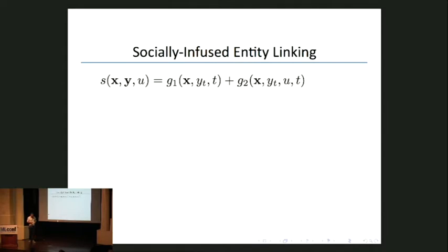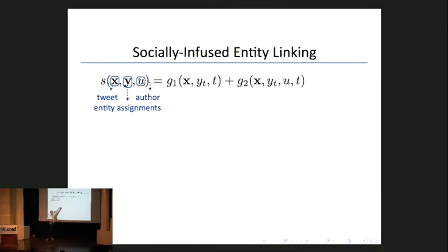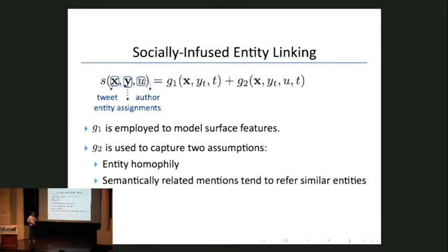The scoring function we want decomposes into two pieces. X is the text of a tweet, Y is the assignment of substrings to entities in a knowledge base, and U represents the author. The first piece, G1, is the state of the art before our research — a standard supervised learning system with surface features describing the entity in the text, like how popular is this entity on Wikipedia, or whether the Wikipedia page name overlaps with the string in the text. The second piece, G2, is the embedding-based method we're adding. T is an index because multiple entities can be mentioned in the same tweet.